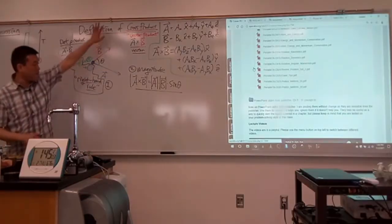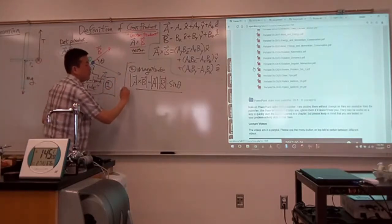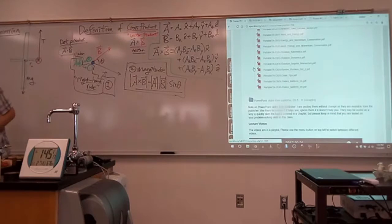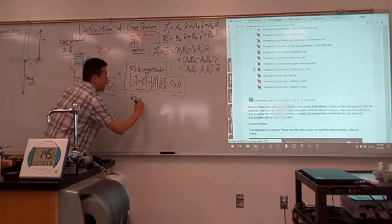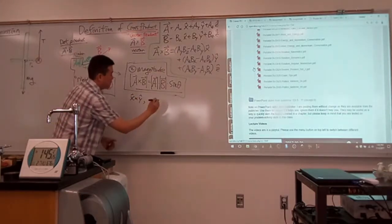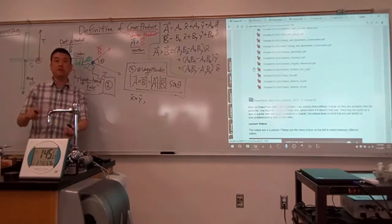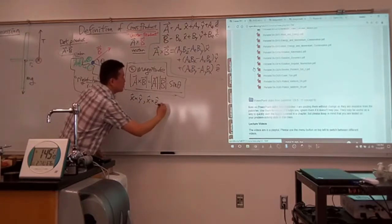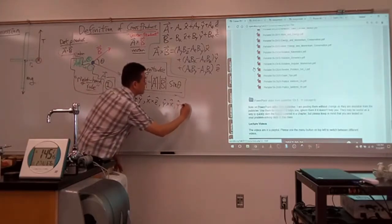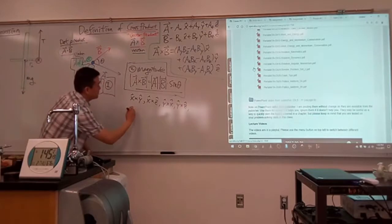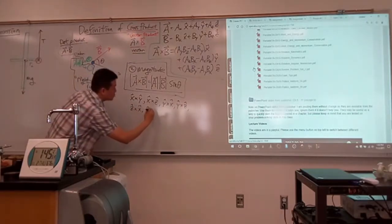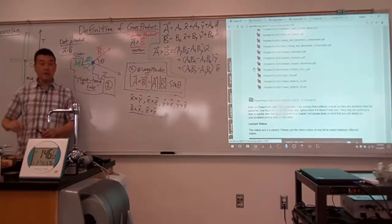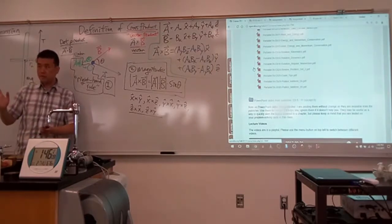Part of what I'm skipping is how these physics definitions using rules one and two actually lead to the exact same thing as the math definition. If you want to work this out, you can do it on your own time. Let me encourage you to work out what is x̂ × ŷ, and all the combinations. There are nine minus three — six of these combinations: x cross y, x cross z, y cross x, y cross z, and two more.